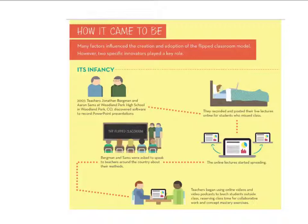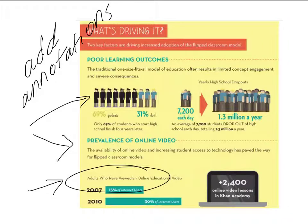The output from Explain Everything is recorded in MP4 format, a format that can be accessed on any mobile device. The input into Explain Everything can come from a variety of sources, including the internet, PDF files, Microsoft Word, and YouTube. These particular slides were uploaded from PowerPoint.